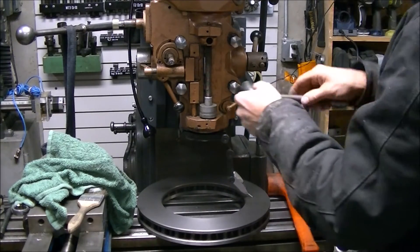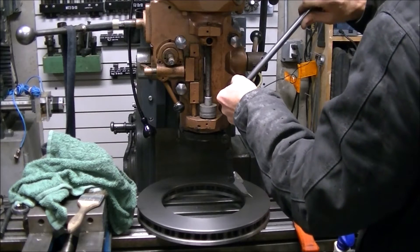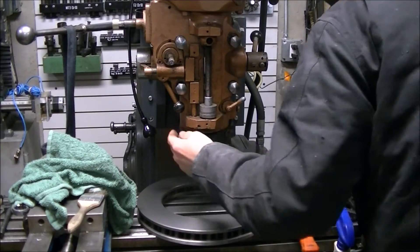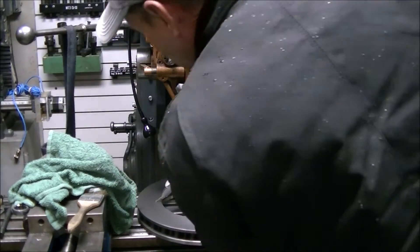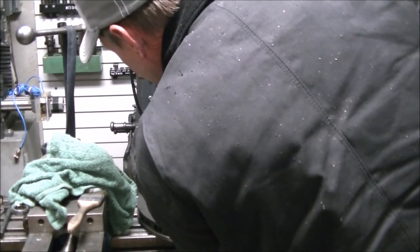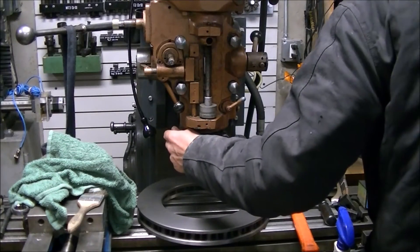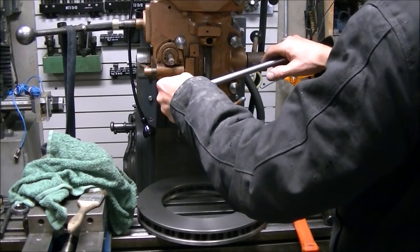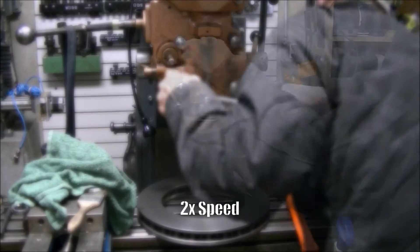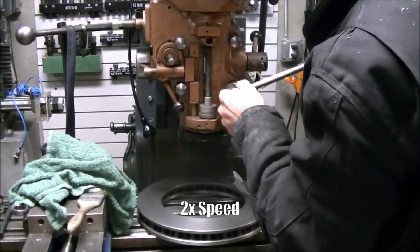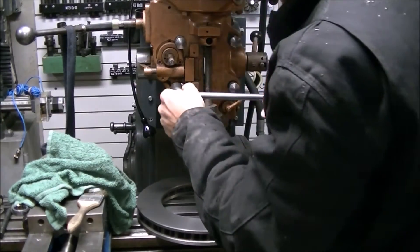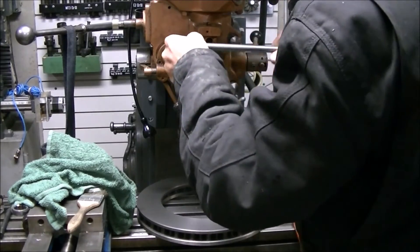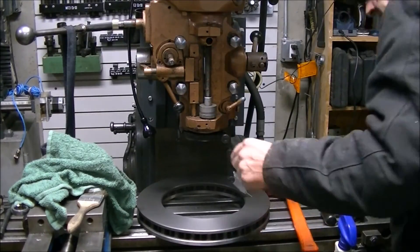So after doing the side-to-side tramming and getting that as close as I could get it or as close as I was willing to spend the time to get it, I went ahead and tightened down the head. Kind of carefully because it did seem like it would move it a little bit if I wasn't careful. Once I had it snugged up, I was able to go ahead and crank down the bolts and get the side-to-side set.